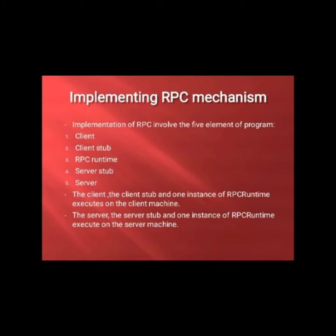Next, we are discussing the implementation of the Remote Procedure Call mechanism. There are five elements: client, client stub, RPC runtime, server stub, and server. The client stub and client execute on the client machine, and the server stub and server execute on the server machine. RPC runtime is a communication package, and a stub is a piece of code used for converting parameters.